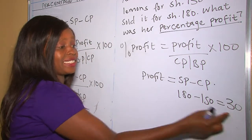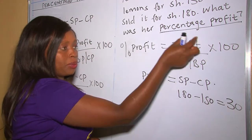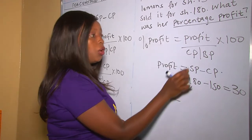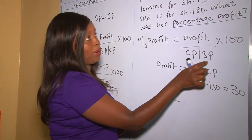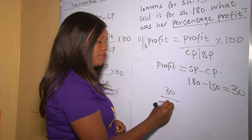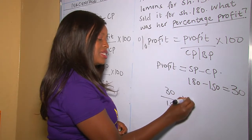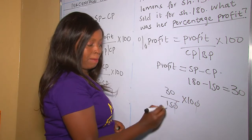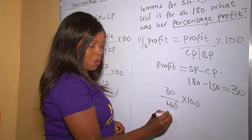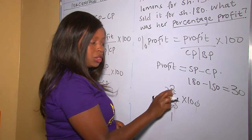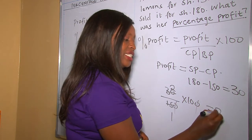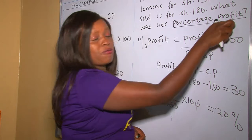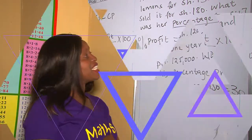Therefore, 30 is our profit. Now we put it back into the formula: 30 over cost price or buying price, which was 150, multiplied by a hundred. After simplifying, zero goes with zero, and we get 20%. This 20% is our percentage profit.